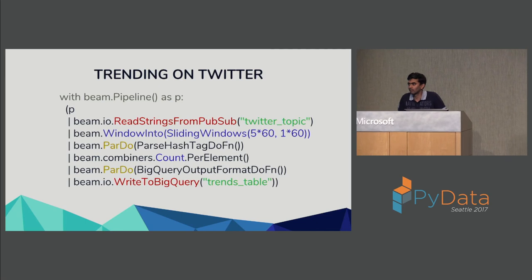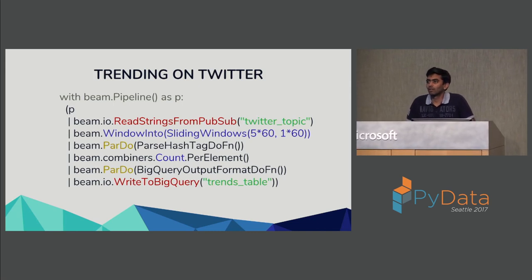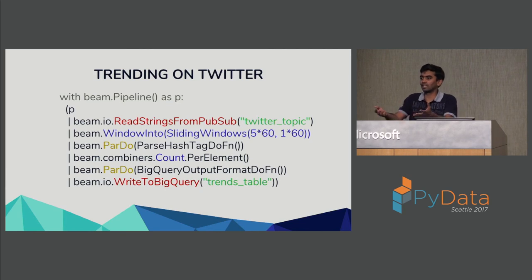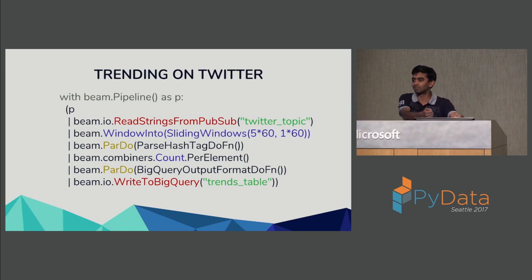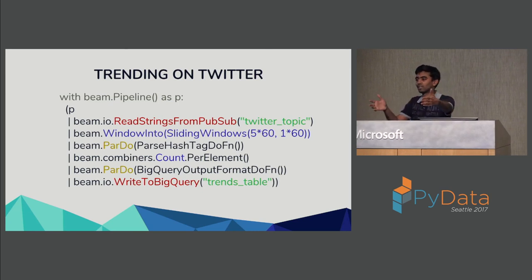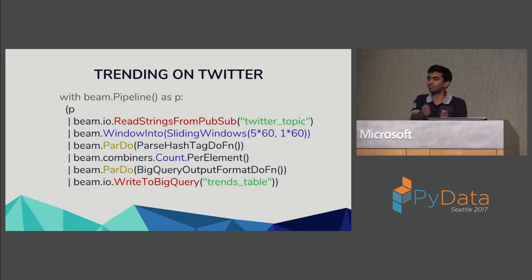Q: Is this the option to use for implementing Lambda architecture or streaming? A: You can implement either with Beam. Lambda and Kappa architectures require running a batch pipeline alongside a streaming pipeline, but with Beam's late data handling you can achieve the same results without the parallel batch pipeline — because if you had a good way to handle late data, you'd be able to achieve the same result with the streaming pipeline alone.